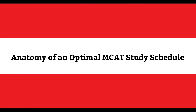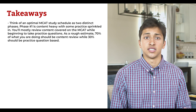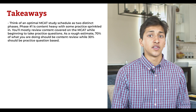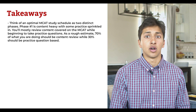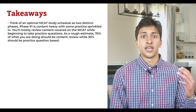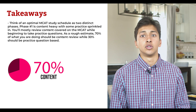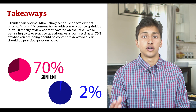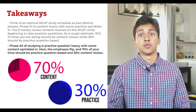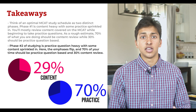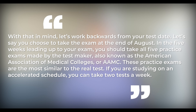You can think of an MCAT study schedule as two phases. The first phase is content heavy with a little bit of practice — roughly 70% content and 30% practice — meaning you will mostly review content while beginning to take practice questions. The second phase is practice heavy with a little bit of content, where the numbers flip: 70% practice and 30% content.